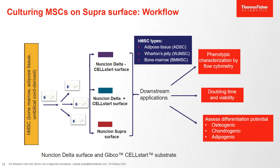After growing these three types of cells on these surfaces, we did certain downstream experiments. We checked for the morphology of the cells — how do they look once grown on these surfaces? We also measured the doubling time and viability of the cells. We did phenotypic characterization, comparing the expression of surface markers on cells grown on a regular surface with ECM coating versus cells grown on the Supra surface. And lastly, we assessed the differentiation potential of these cells to see if there is any change when the cells are grown on Supra surface in the absence of ECM.